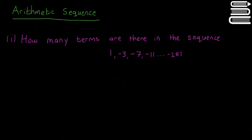We're going to look at two more questions about arithmetic sequences in this video, and then we're going to move on to arithmetic series. This first question reads: how many terms are there in the sequence? The sequence goes 1, minus 3, minus 7, minus 11, dot dot dot — meaning there are loads of numbers in between — all the way down to minus 251.